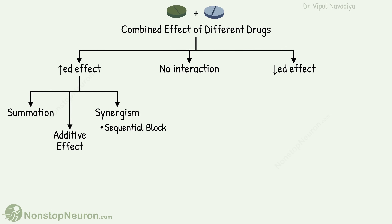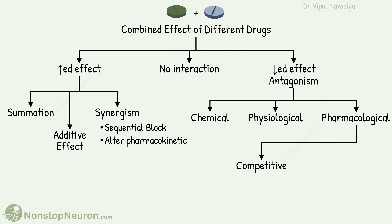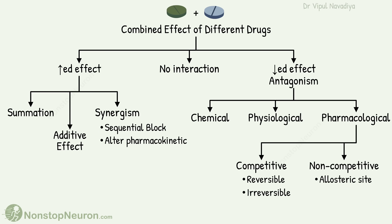Synergism can be achieved by sequential block, or when one drug alters the pharmacokinetics of the other drug. The decreased effect, or antagonism, may be chemical, physiological, or pharmacological. Pharmacological antagonism may be competitive or non-competitive. Subtypes of competitive antagonism are reversible and irreversible. Mechanisms for non-competitive antagonism are modulating the allosteric site or events downstream to the receptor.